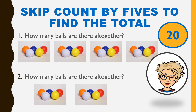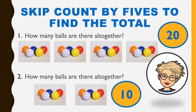Very good. If you've forgotten how to count in fives, you can always go back in the video to the area where I count in fives for you, and you can do that as many times as you need to until counting in fives becomes easier. Counting in fives means we don't have to count each ball. We can put them in groups of fives and skip count. How many balls are there altogether? 5, 10. There are 10 balls altogether.